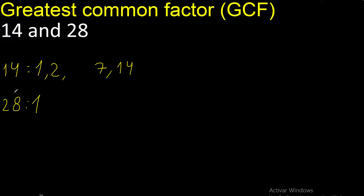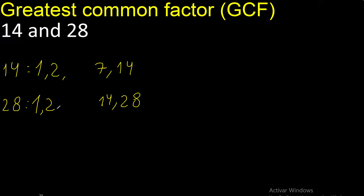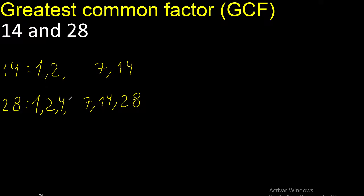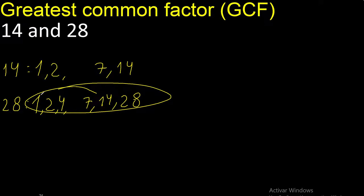Always start with 1. 28 divided by 1 is 28. Divided by 2 is 14. Cannot be divided by 3. Divided by 4 is 7. Cannot be divided by 5, cannot be divided by 6. Next, 7 — 7 is here. Factors.